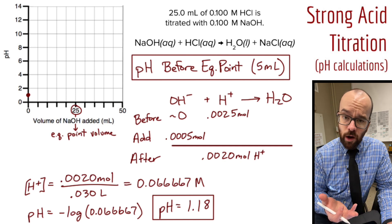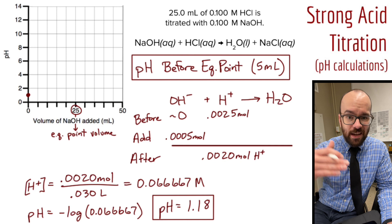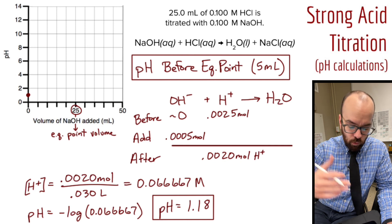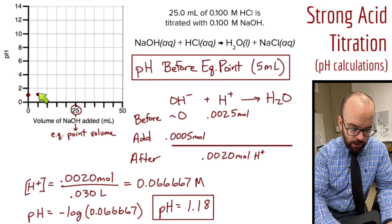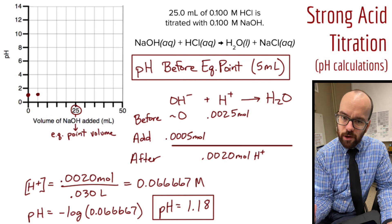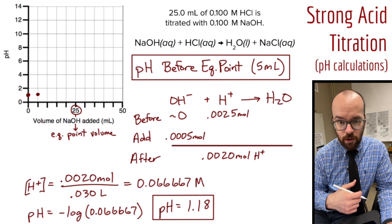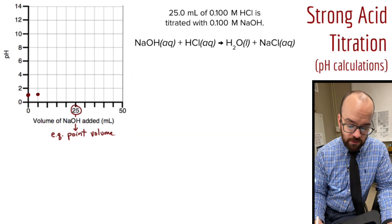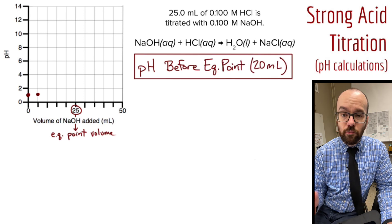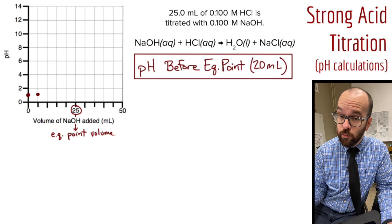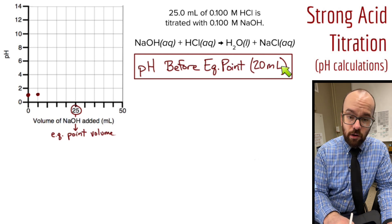My starting pH was 1, I added 5 milliliters of base and I'm at 1.18 — the pH barely moved, only 0.18 units. I can graph that at 5 milliliters on my graph. Until we get to the equivalence point, the pH changes are going to be very small. Now let's add more base — 20 milliliters — so we're approaching the equivalence point at 25 milliliters.